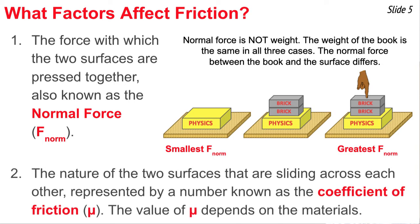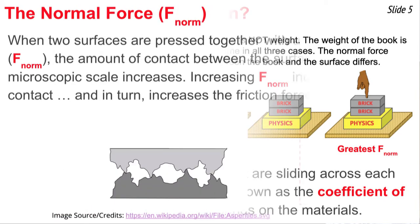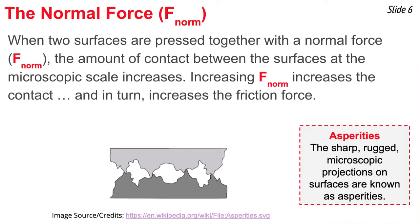The second factor is the coefficient of friction, which refers to the nature of the two surfaces sliding across each other, represented by the symbol mu. At the microscopic level, all surfaces consist of sharp rugged projections called asperities. When two surfaces are pressed together more firmly, they flatten slightly at the microscopic level, increasing the area of contact. This increased contact strengthens the intermolecular forces, which in turn increases the force of friction.